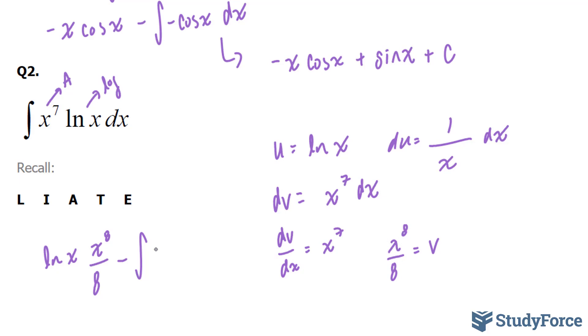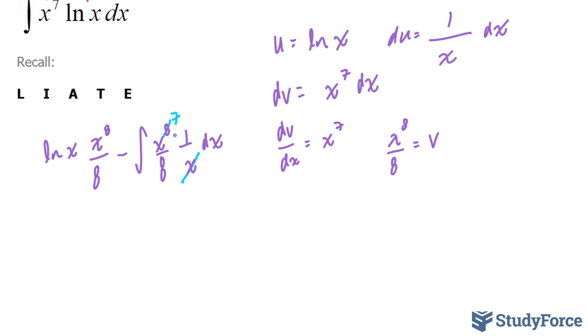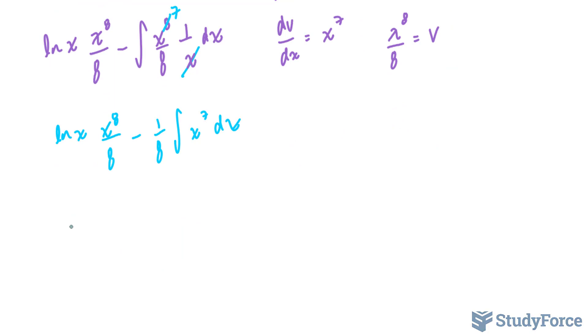v was right there: x to the power of 8 over 8. And du was 1 over x dx. You'll notice something special: these x's will cancel out, or at least one of them up here. You can pull out that 8. It's not necessary over there. So I'm just going to write this out over 8 minus, I'm pulling out that 1 over 8, x to the power of 7 dx. I'm going to integrate x to the power of 7. We know what that is. We did it up here already. So we end up with ln x times x to the power of 8 over 8 minus 1 over 64 x to the power of 8 plus c.